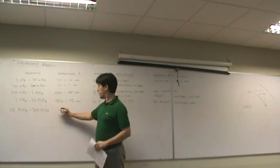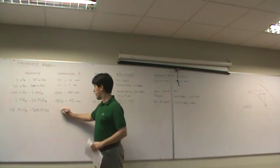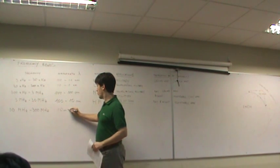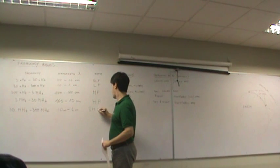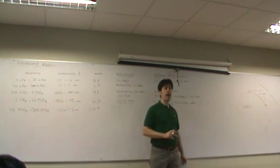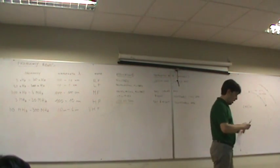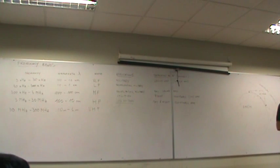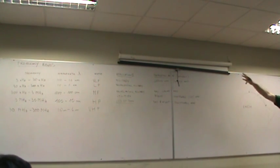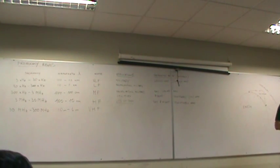VHF covers 30 MHz to 300 MHz, with wavelengths from 10 m to 1 m. VHF stands for very high frequencies. By today's standards those are not very high frequencies, but when the frequency table was created, those were really very high frequencies at the time.